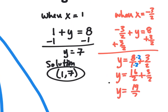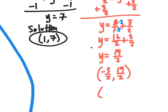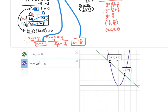So y equals 19 halves. Writing these solutions: the first intersection point is (1, 7), and the second is (negative 3/2, 19/2). As decimals, that's negative 1.5 comma 9.5. When I graph both equations in Desmos, the intersection points are (1, 7) and (negative 1.5, 9.5) — exactly what we found algebraically.